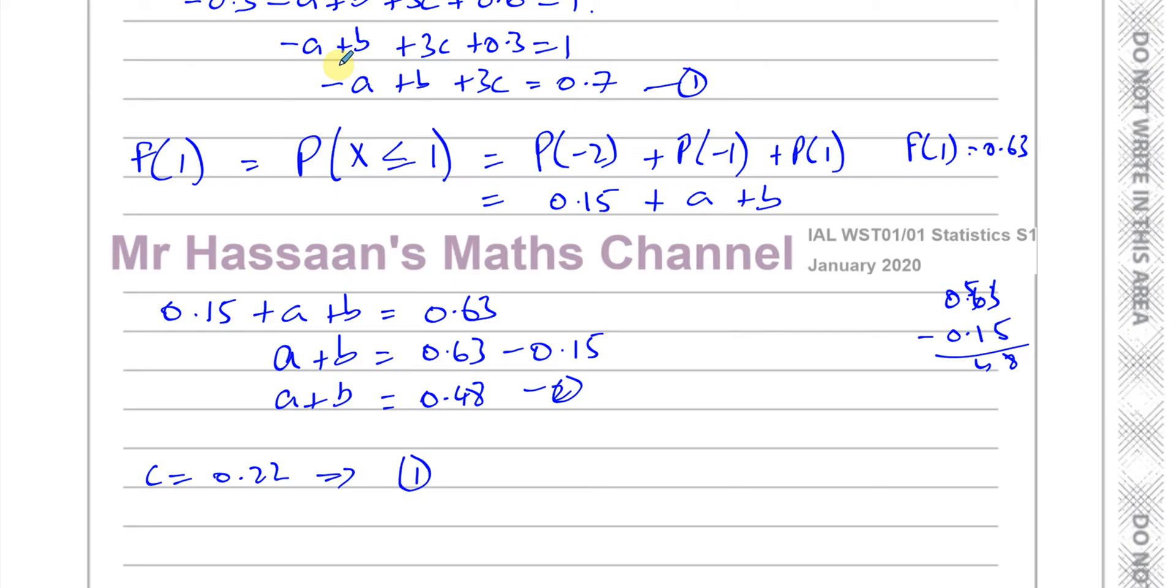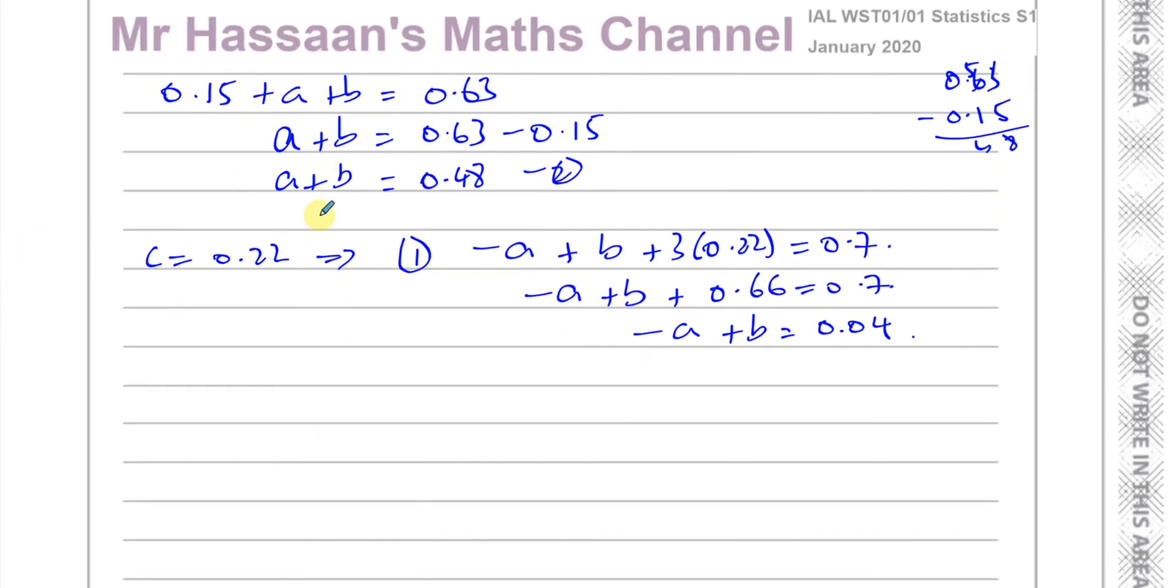If I put that into the first equation I found here, I have minus A plus B plus 3 times 0.22 is equal to 0.7. So I have minus A plus B plus 0.66 equals 0.7. So minus A plus B equals 0.7 minus 0.66, which is 0.04. Now I have these two equations. I have A plus B equals 0.48, and I have minus A plus B equals 0.04.